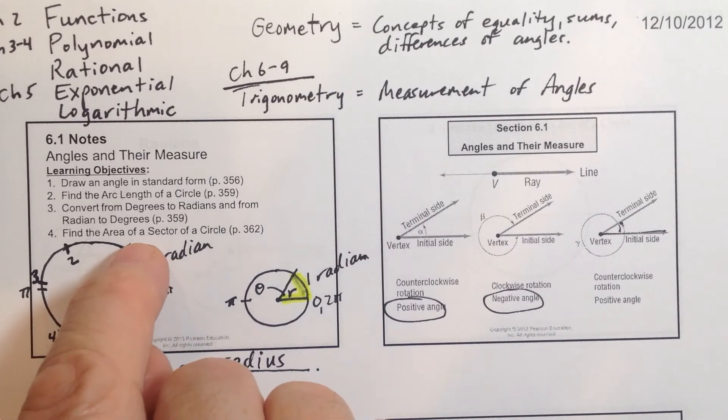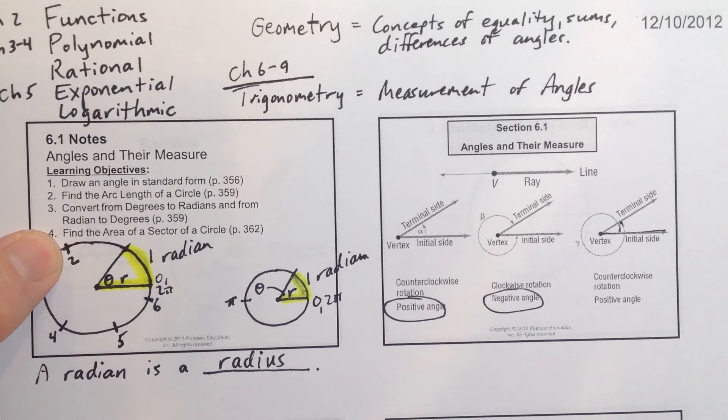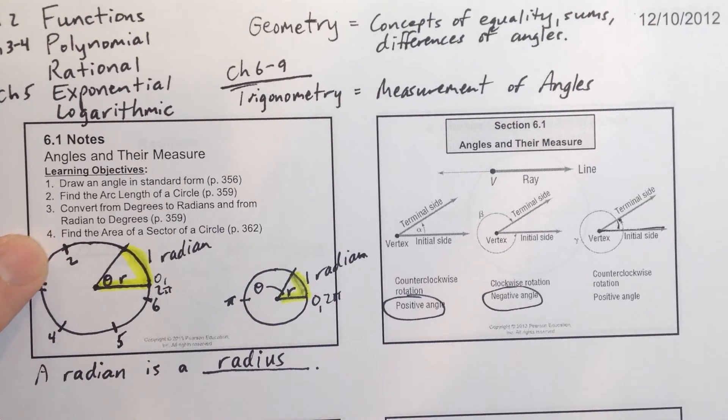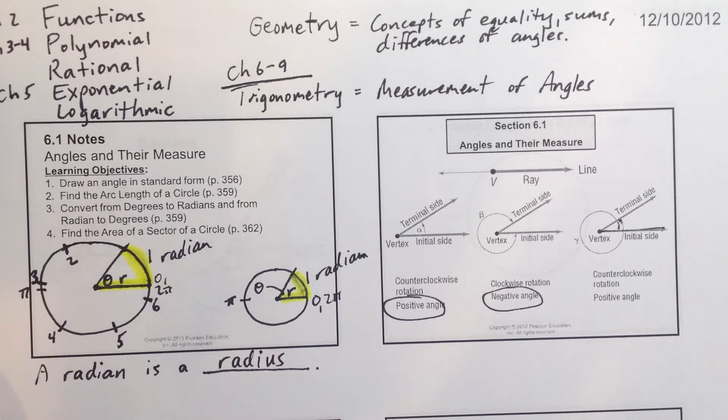So then we lay it down again from that spot as the starting point to the next spot. That would be 2 radians or 2 radiuses. And then 3 radians would be here. And we know that 3.14 being pi is right here in the halfway point. Now, 4 radians, 5 radians, and 6 radians. And so you should understand, when I say what is a radian, you say it's a radius. That's it. And that's the other way we use to measure angles.